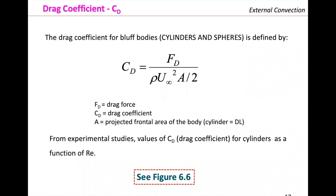When evaluating cylinders, we again use figure 6.6 to get the drag coefficient, and from the drag coefficient we get the drag force, because we are evaluating fluids on top of solid surfaces and the drag force becomes important. The formula for drag force is: F_d = C_d · A · (ρV²/2). F_d is the drag force, C_d is the drag coefficient, and A is the projected frontal area of the body — for a cylinder that is D·L. Values of the drag coefficient for cylinders as a function of Reynolds are in figure 6.6. We are going to solve a cylinder problem that requires calculating the drag force.